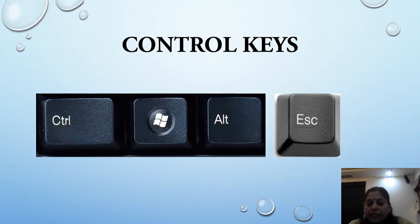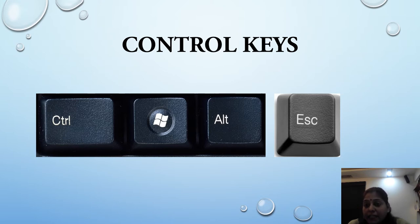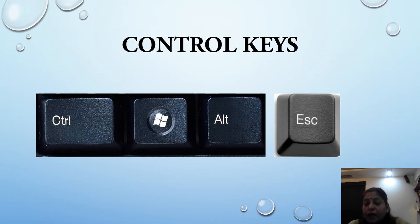The second key type is control keys. In computing, a control key is a modifier key which, when pressed in combination with another key, performs a special operation. For example, Control plus C. Similar to the Shift key, the control key rarely performs any function when pressed by itself. The control key is located on or near the bottom side of the keyboard. Ctrl, Alt, Windows logo key, and the Escape key are various examples of control keys.